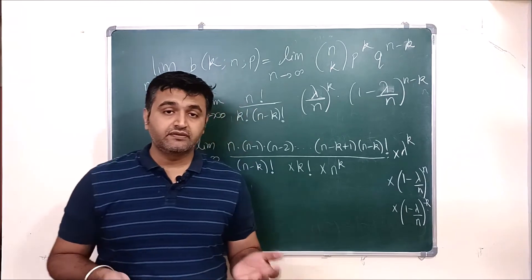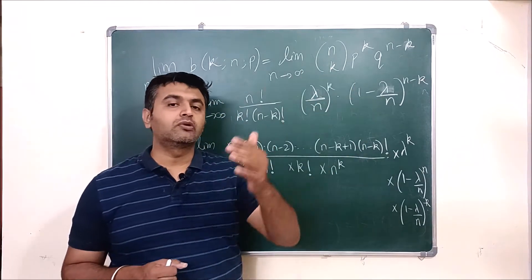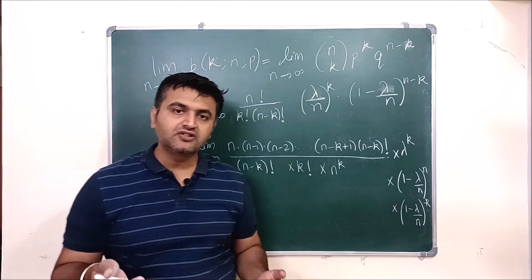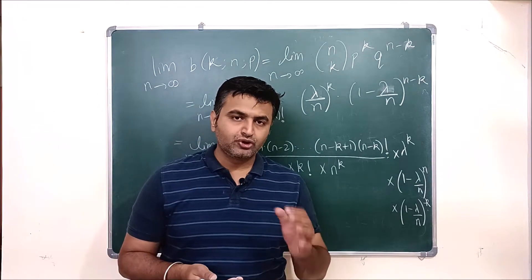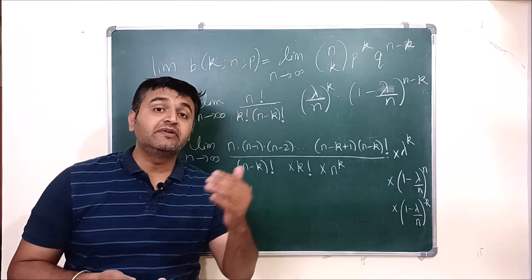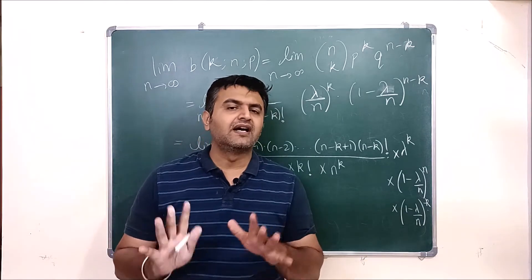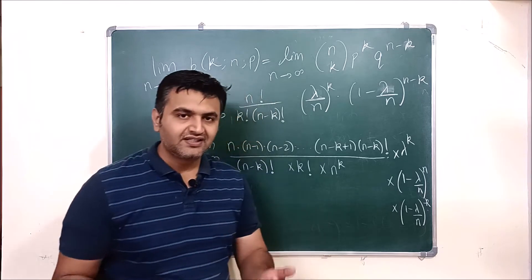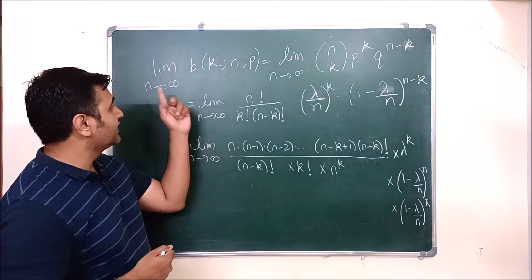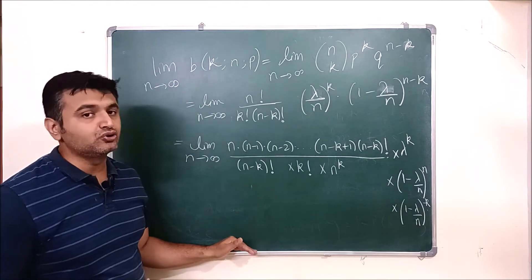Hey everyone. In an earlier lecture we talked about Poisson distribution and before that we talked about binomial distribution. Many times when you read this topic, after Poisson distribution you will see a phrase like 'Poisson distribution is the limiting case of the binomial distribution,' but you will hardly find the proof. So I thought let's give a proof for this. I want to prove that the limiting case of a binomial distribution will give the Poisson distribution.